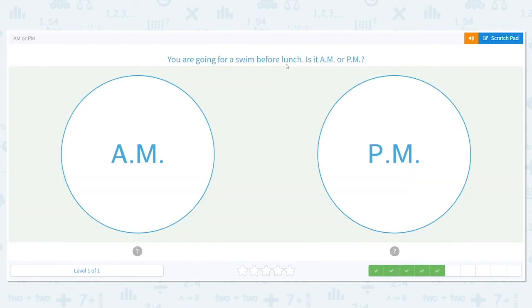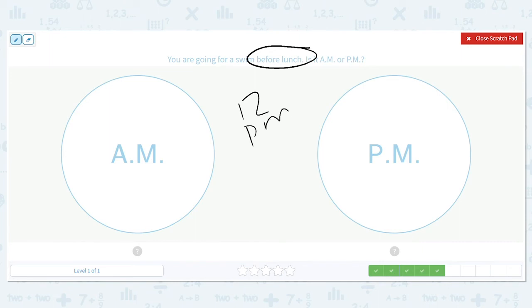You're going for a swim before lunch. Before lunch, when did we say lunch typically is? Lunch is typically at 12 o'clock P.M., which is the first P.M. part of the day. So if you're going before lunch, that would be A.M.